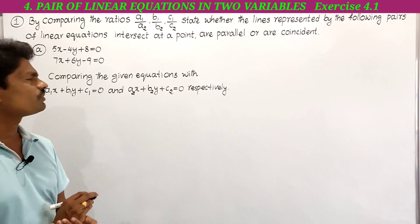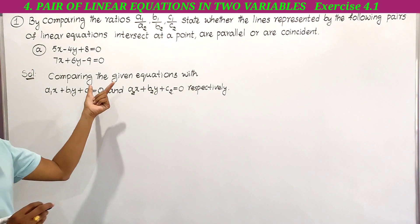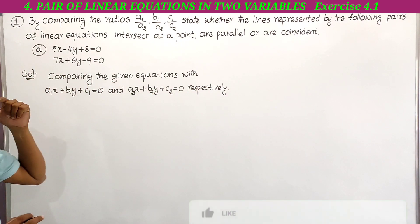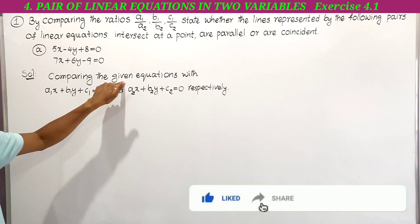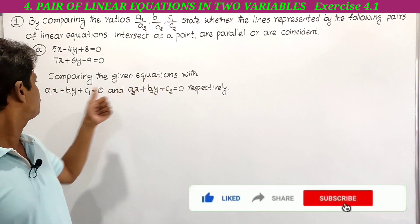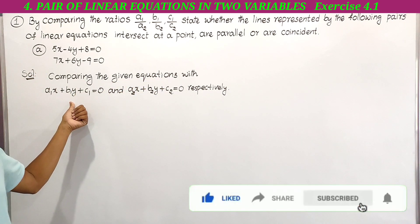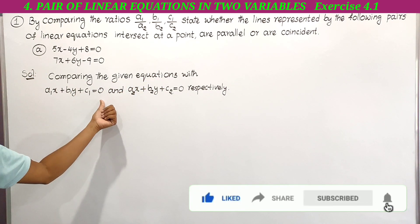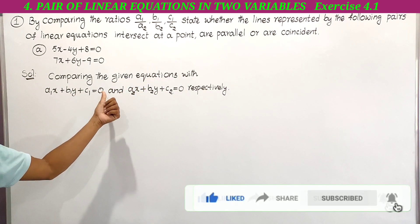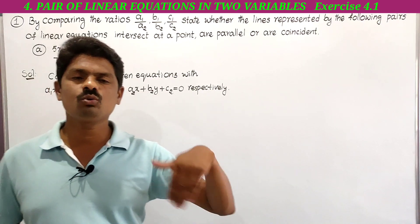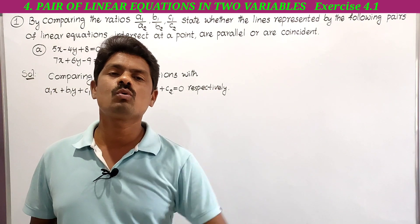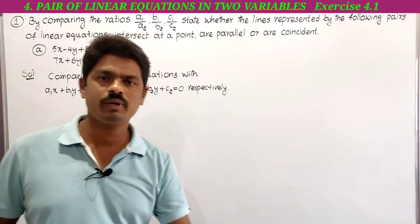First we have to compare the given lines with the standard form: a1x plus b1y plus c1 equal to 0, and a2x plus b2y plus c2 equal to 0 respectively.